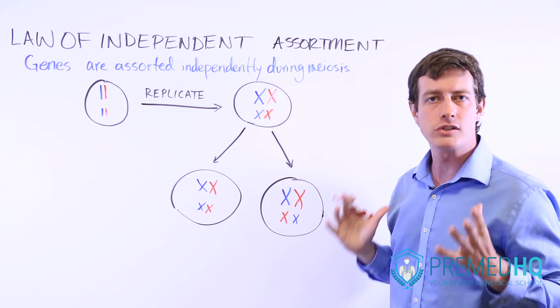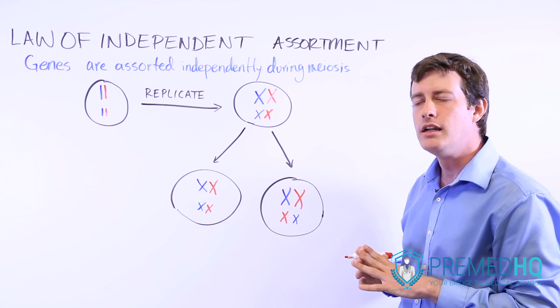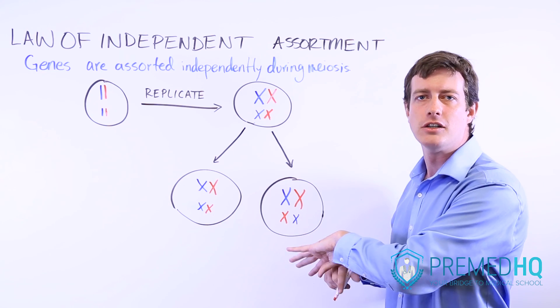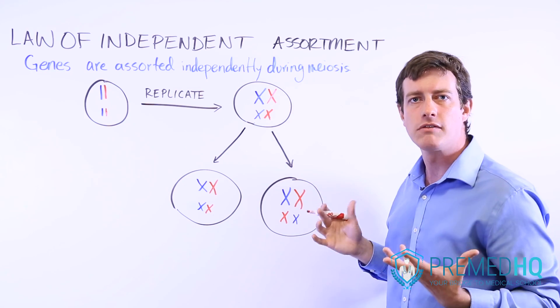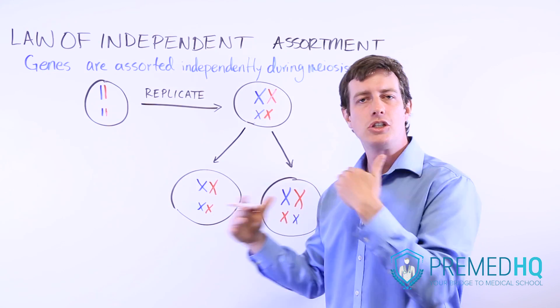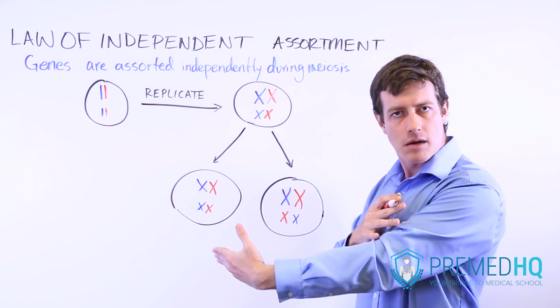And so that is what independent assortment means. That means that the gene for hair color and the gene for eye color and the gene for a widow's peak and other genetic features are no more likely to be inherited with each other as they are to be inherited separately.